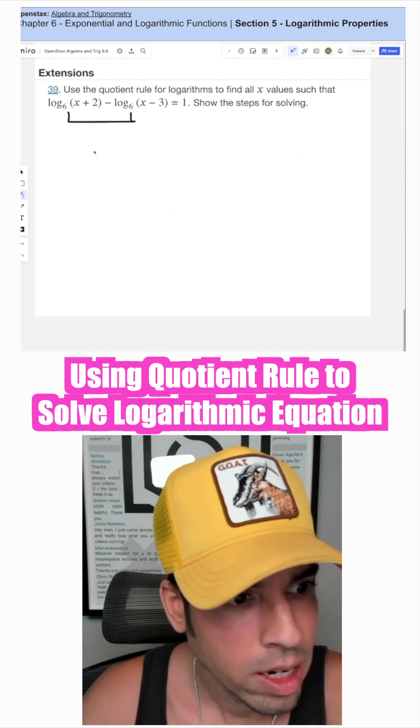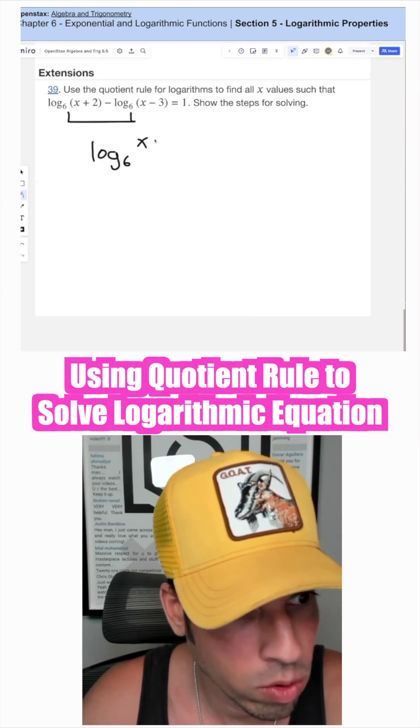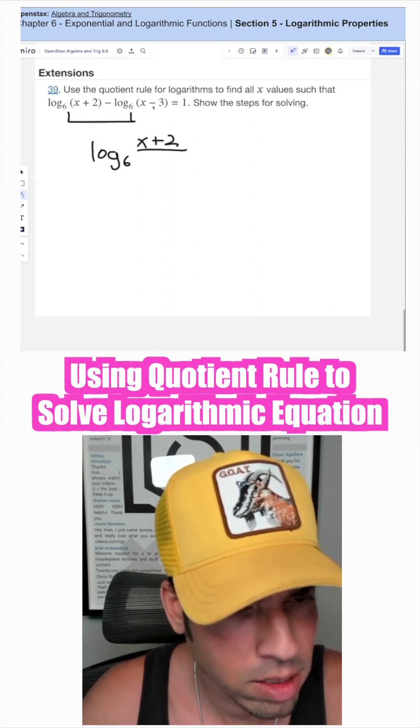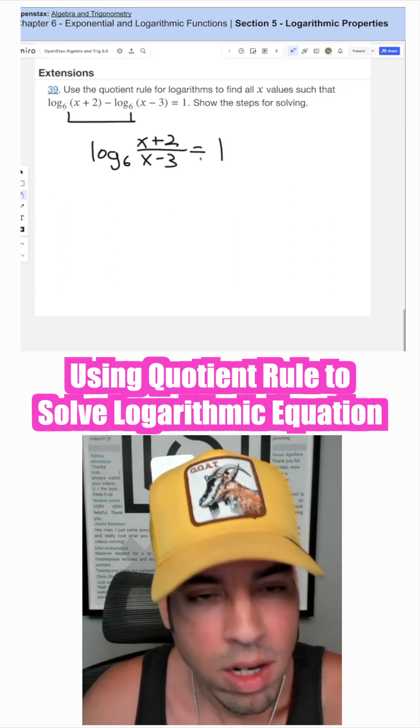and a subtraction, it's the same as log base six of the quotient of these two, with the first one going on top and the second argument going on the bottom, and this equals one. Now what I'm going